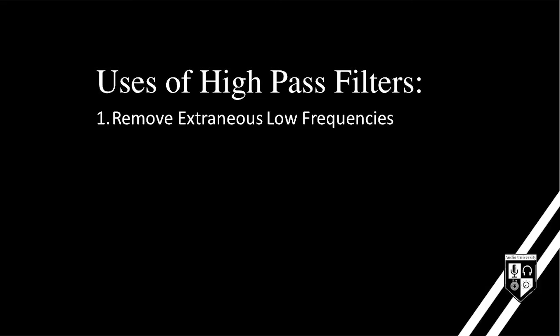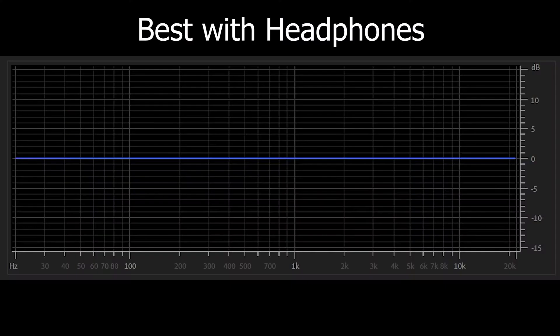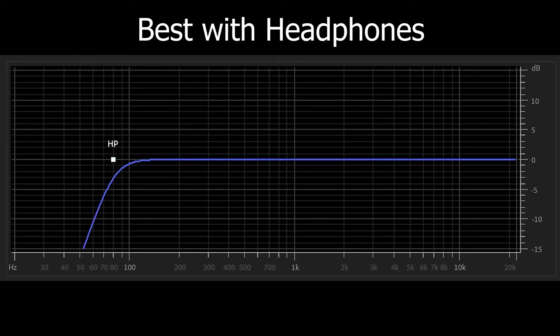You use a high pass filter to remove unneeded frequencies. Every instrument operates within a specific band of frequencies, and using a high pass filter you can remove the frequencies below that band. For example, the male speaking voice operates from about 80 Hz and up, so you can use a high pass filter to remove the frequencies below 80 Hz. Here's an example of my voice without a high pass filter, and here's an example with one — it just cleans it up a little bit. You can always adjust it later, but this is a great starting point.